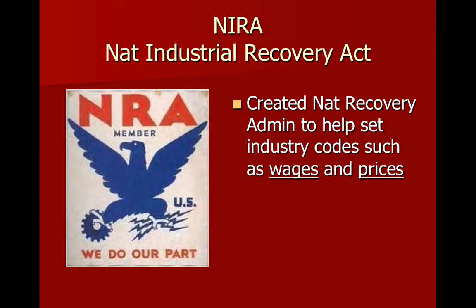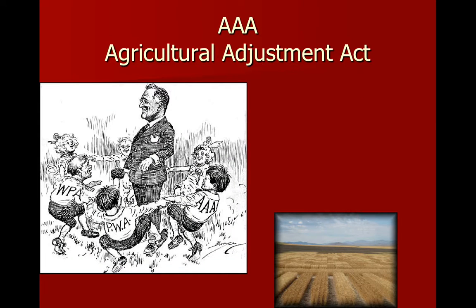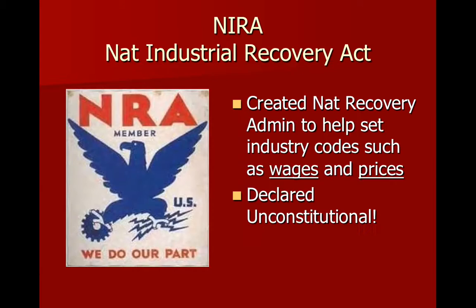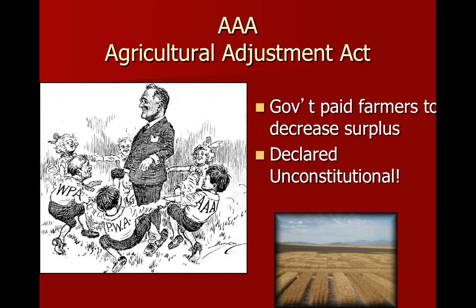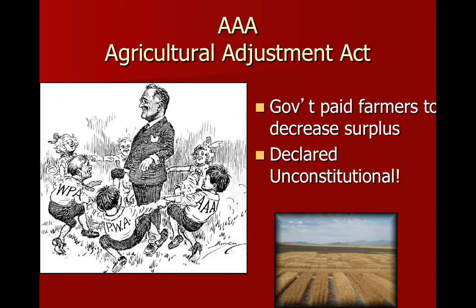Now let's look at recovery — getting people out of the Great Depression. The NIRA, the National Industrial Recovery Act, created the National Recovery Administration, the NRA, to help set industrial codes such as wages and prices. It was declared unconstitutional — we'll look at the NRA in much more detail in class. The AAA — where the NRA was for urban, the AAA was for rural — had the government pay farmers to decrease their surplus, literally killing pigs to make pork more expensive. It will also be declared unconstitutional. The NIRA and the AAA are the backbone of FDR's recovery plan. They are struck down as unconstitutional, and we need to understand all of that.